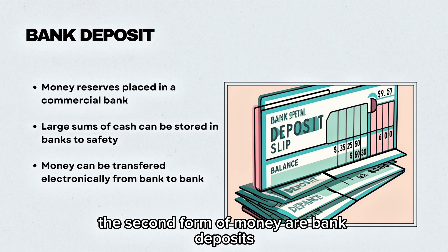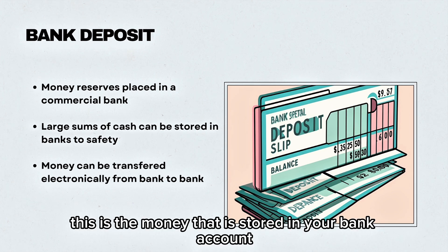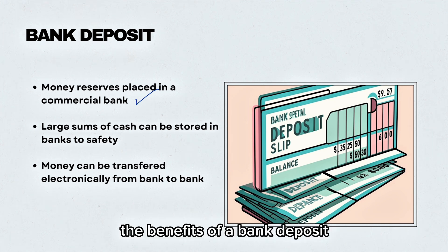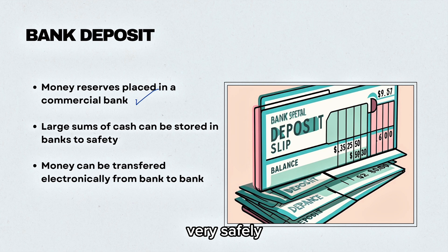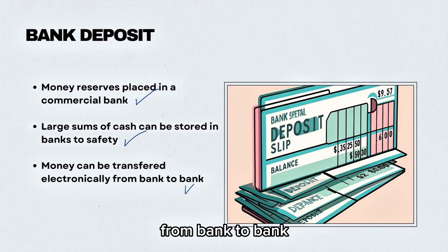The second form of money are bank deposits. This is the money that is stored in your bank account. The benefits of a bank deposit is that you can store large sums of cash very safely and money can be transferred electronically from bank to bank.